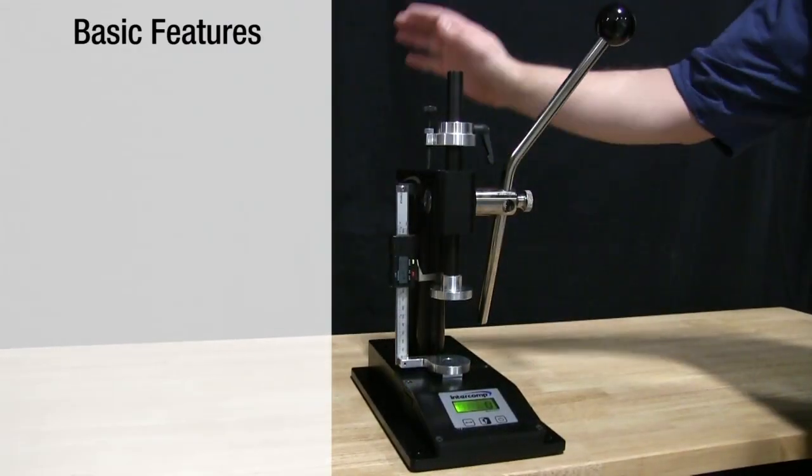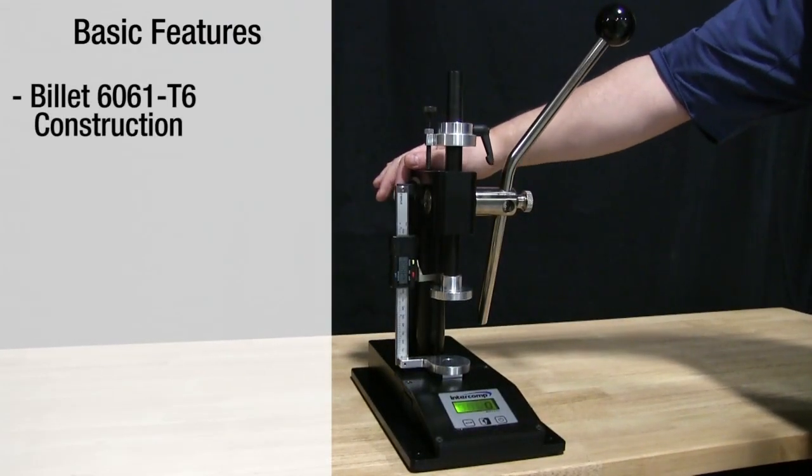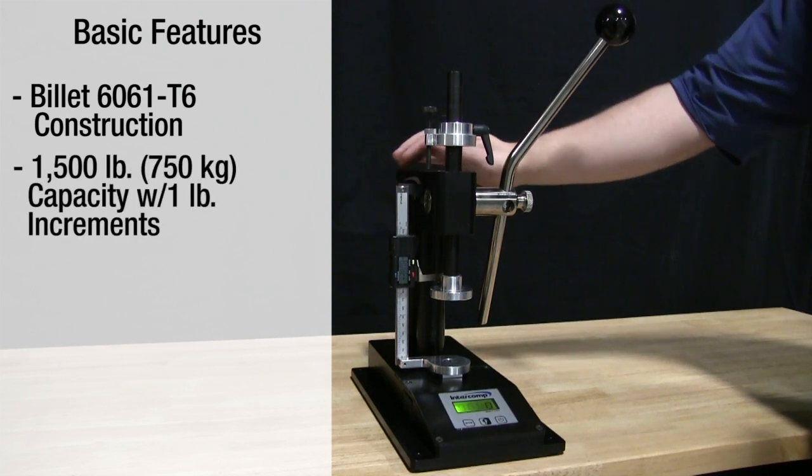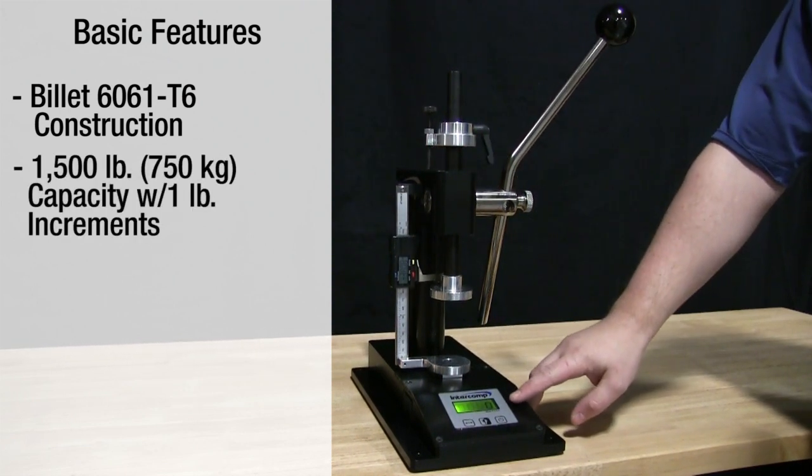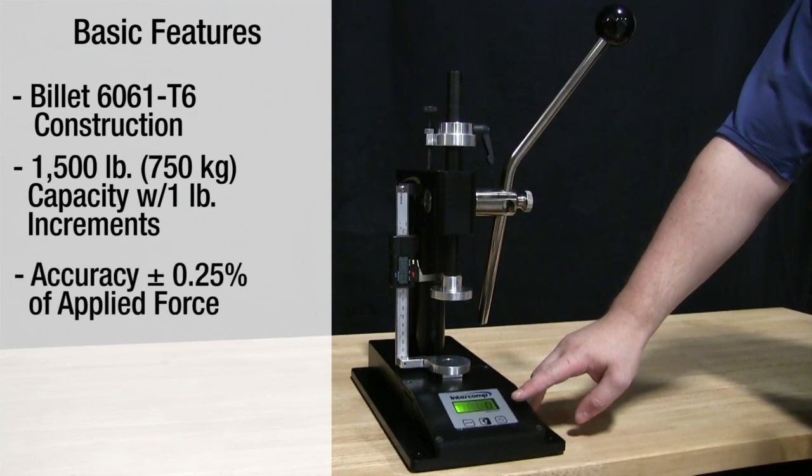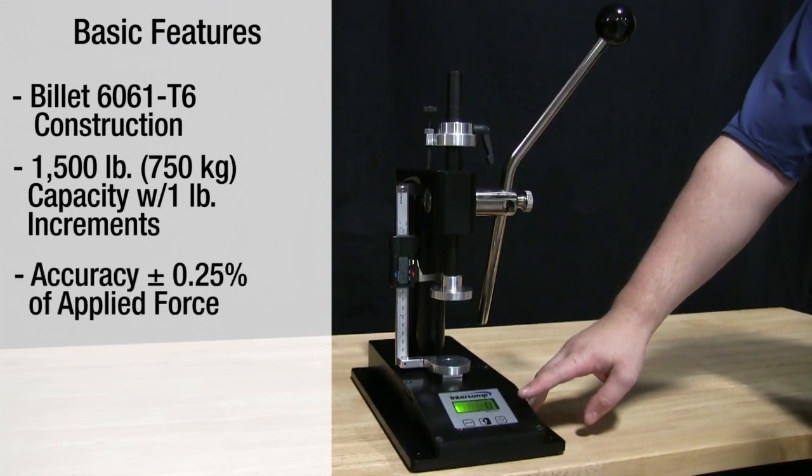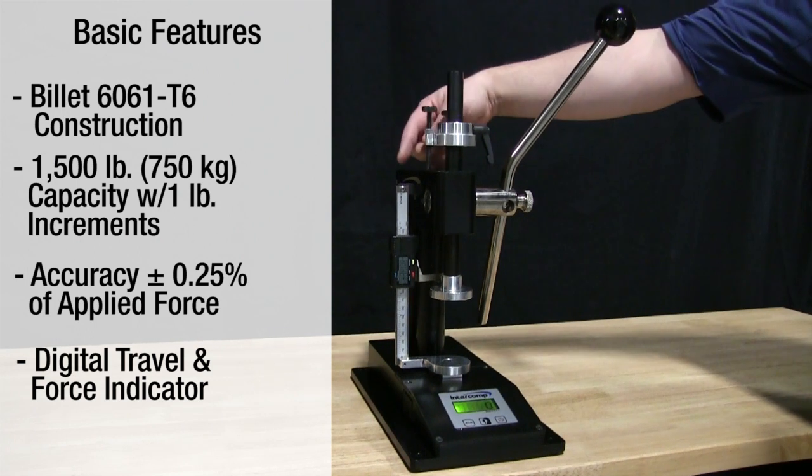The frame of our Arbor valve spring tester is machined from billet aluminum. It includes a digital readout connected to a 1500 pound capacity load cell with an accuracy of one quarter of one percent and has a digital travel indicator for the most precise readings possible.